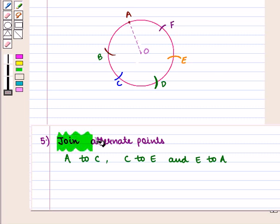Now, we join alternate points, that is, point A to point C, point C to point E, and point E to point A.